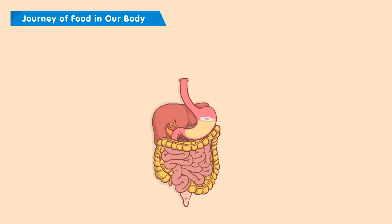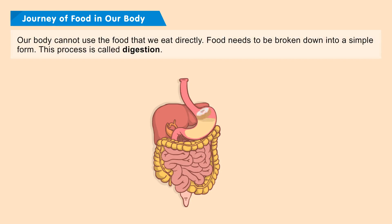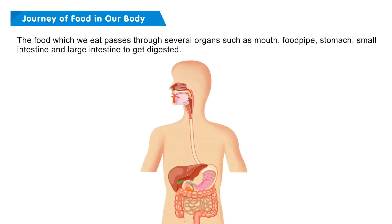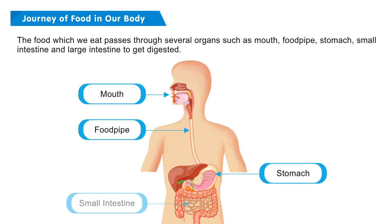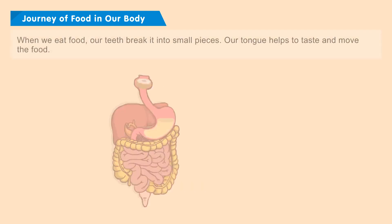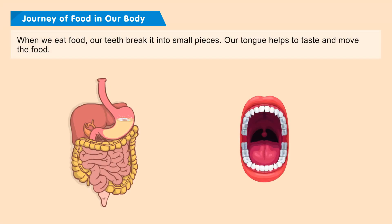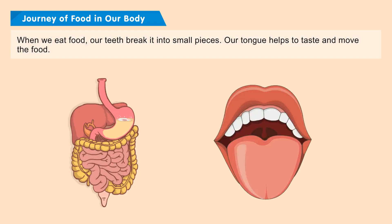Journey of Food in Our Body: Our body cannot use the food that we eat directly. Food needs to be broken down into a simple form. This process is called digestion. The food we eat passes through several organs — mouth, food pipe, stomach, small intestine, and large intestine — to get digested. When we eat food, our teeth break it into small pieces, and our tongue helps to taste and move the food.